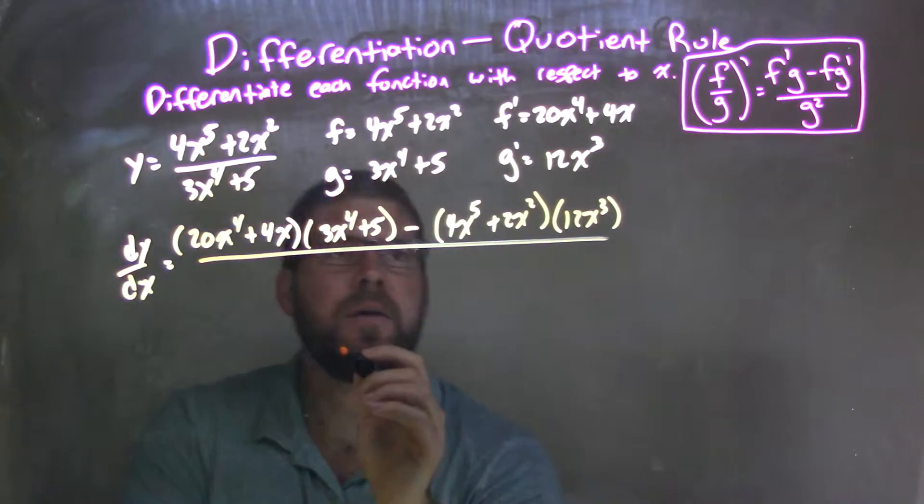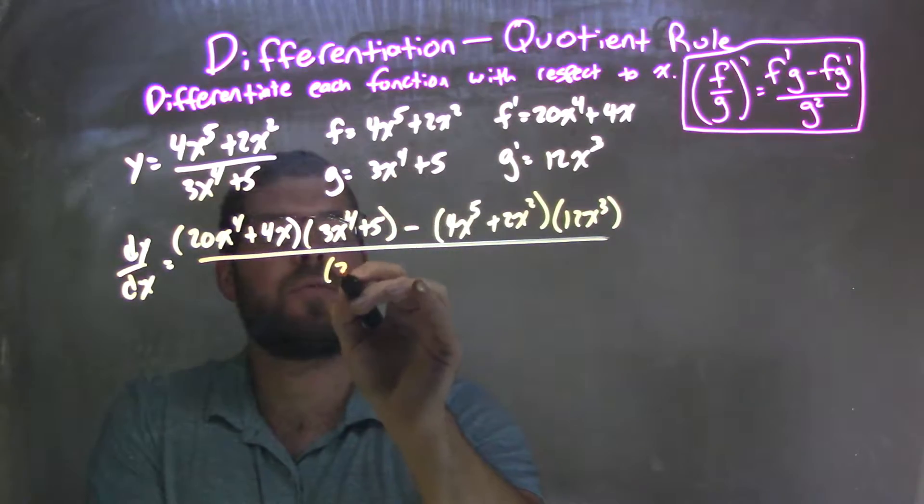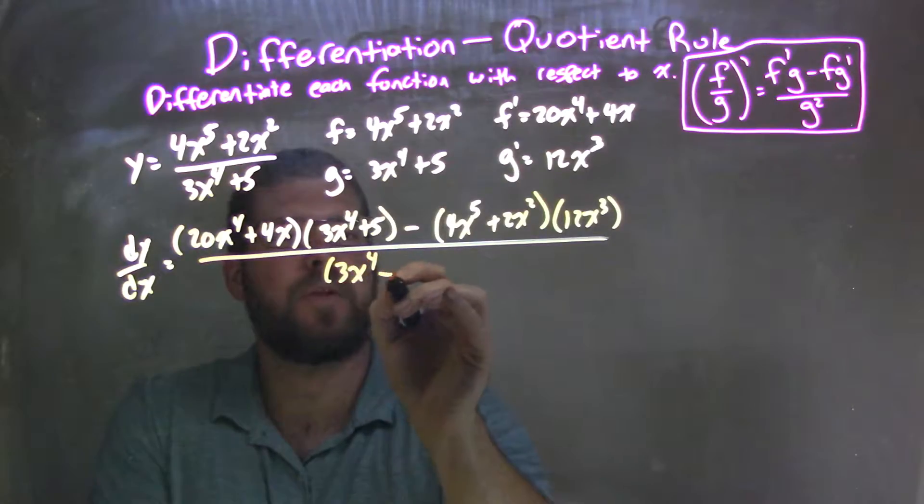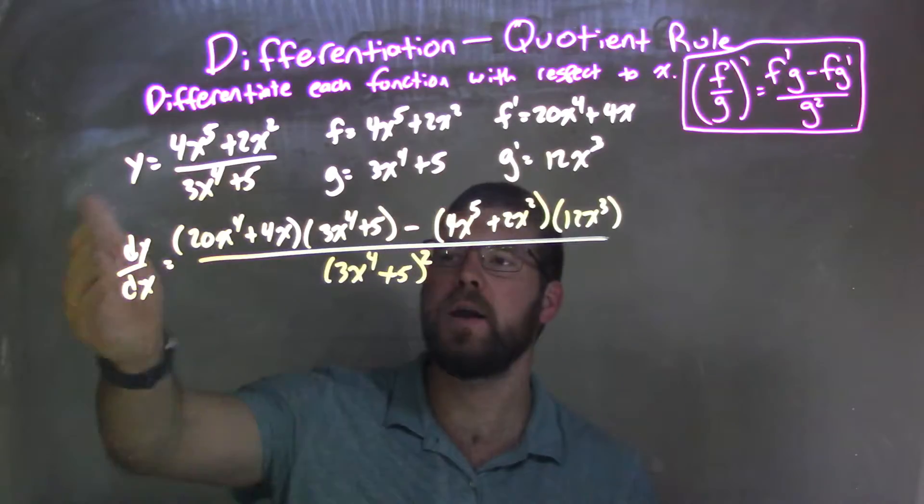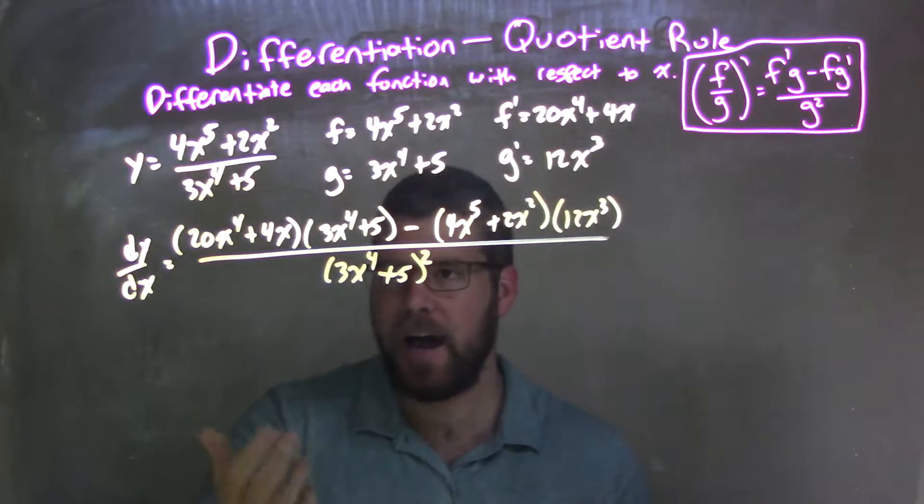All of that over my denominator, which is g squared. So we have 3x to the fourth plus 5, all squared. So at this point, I've finished my calculus. I now just need to apply algebra.